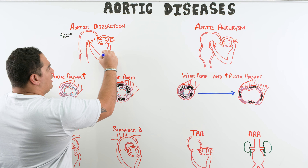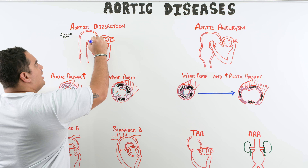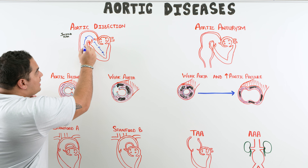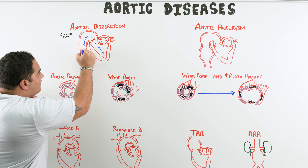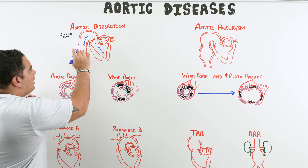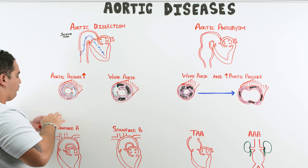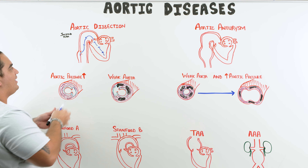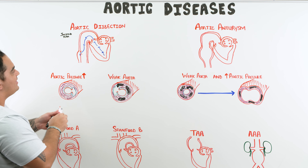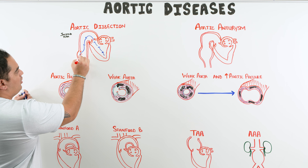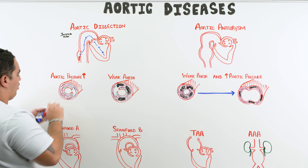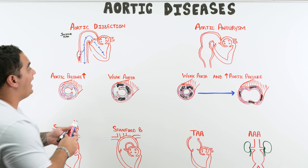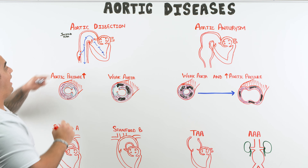When you have that intimal tear, blood can easily dissect in between the tunica intima and the tunica media. Blood that normally flows through the left ventricle, into the aorta, and down the true lumen can instead rip through the intima and accumulate in what we call a false lumen.